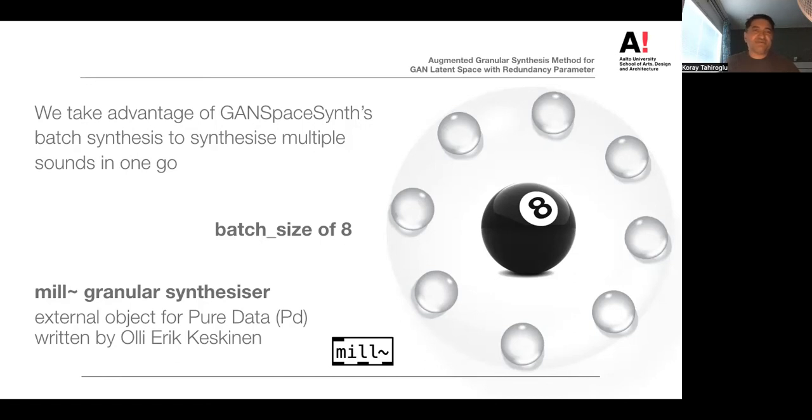This synthesis problem is custom to our GANSpaceSynth model we use in Alterity. GANSpaceSynth is a hybrid GAN architecture for organizing GAN latent space using a dimensionality reduction technique, which gives us an opportunity to navigate in GAN latent space in a more controlled manner. In addition to GANSpaceSynth, we use the modified version of the Mill Granular Synthesizer in Alterity. Mill is an external object for Pure Data written by Anıl Erkin Keskin.